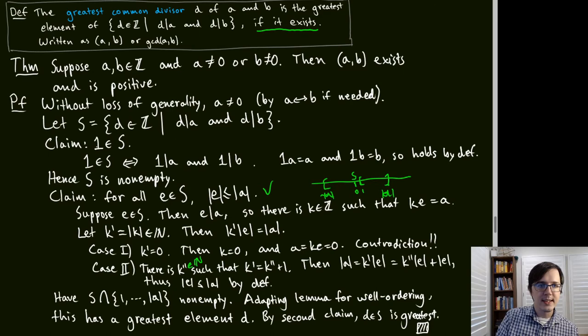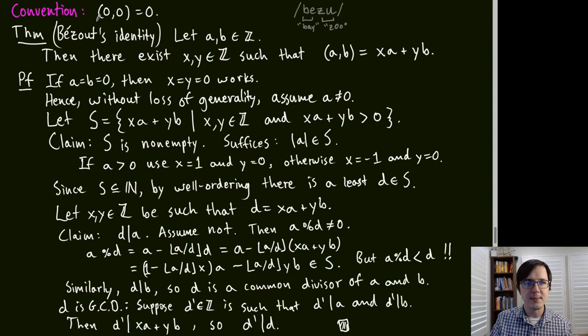A useful convention: gcd(0, 0) = 0. Now we state Bézout's identity, which is very important and connects multiplication and addition. It makes it much easier to manipulate GCDs and prove things about them.